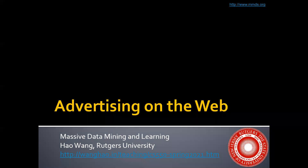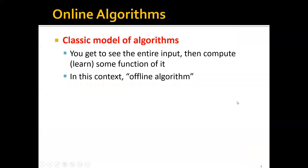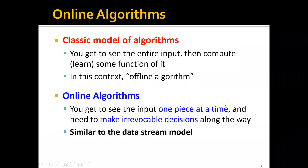In this lecture, we'll talk about a new topic: advertising on the web, which is actually related to the online learning we briefly mentioned before. In the classic model of algorithms, you get to see the entire input and then compute or learn some function of it — we call these offline algorithms. In contrast, for online algorithms, you get to see the input only one piece at a time, and you need to make irrevocable decisions along the way. This is similar to the data stream model we talked about in the previous lecture.